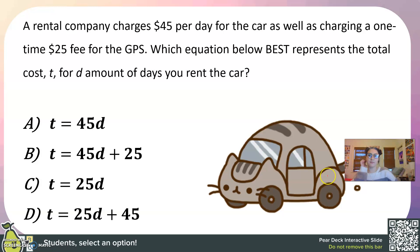My final question. A rental company charges $45 per day as well as charging a one time $25 fee for a GPS. Which equation below best represents the total cost T for D amount of days. So $45 per day should look like 45D. 25 is a one time fee. So nothing's changing there. That's going to stay the same. So I'm looking for an equation that is T equals 45D plus 25. And that is B.